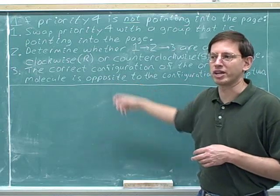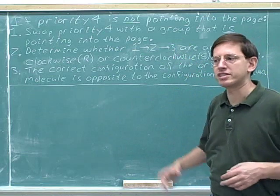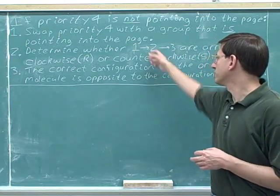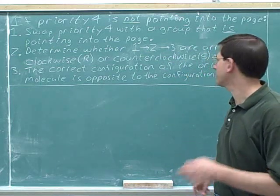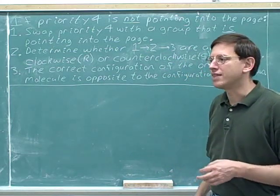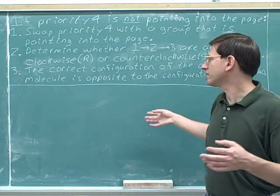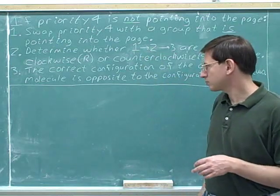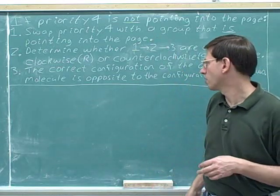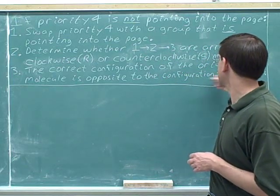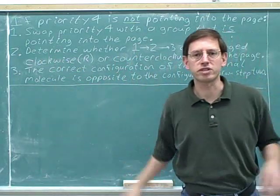We know from the single swap rule that since the original molecule differs from the molecule in step two by a single swap, they must have opposite configurations. So whatever configuration you got from step two, that must be opposite to what the configuration was before the swap — and that explains our step three. The idea is: swap the number four so it's pointing away from us, determine whether one to two to three are clockwise R or counterclockwise S, and then remember the original molecule must have a configuration opposite to the configuration after the swap. Let's work through some examples.